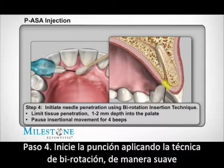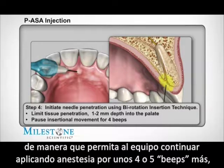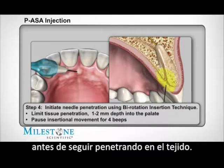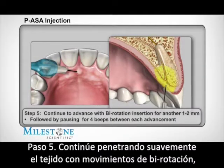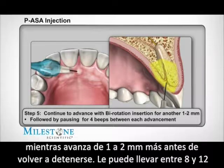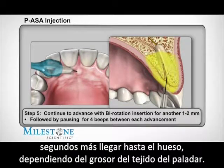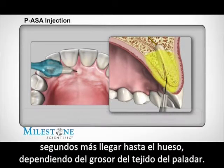Step 4: Rotate the handpiece back and forth with a slight forward movement to allow a shallow puncturing of the tissue to a depth of one to two millimeters. Then stop forward movement to allow the STA system to continue to deposit anesthetic for an additional four to five beeps before any further penetration. Step 5: Continue to very slowly penetrate the palatal tissue with a gentle back and forth movement while simultaneously advancing another one to two millimeters before pausing once again. It should take anywhere between eight to twelve seconds to reach bone, depending on the thickness of the palatal tissue.